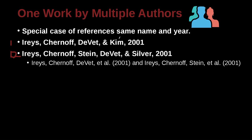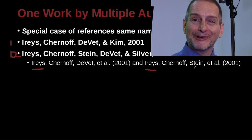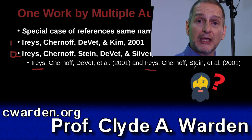Let's see how we would cite that inside our research paper. We have Iries, Chernoff, Yvette, et al. and Iries, Chernoff, Stein, et al. These have multiple authors, so we should be able to use et al. the second or more times in our paper, not the first time. The first time we need to write out everybody, but the second and after time. However, if we just wrote 'Iries et al.' and then 'Iries et al.' again, these two papers would look the same and the reader would not know which paper is which.